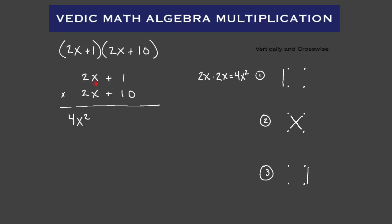Step number two, we're going to do crosswise: two X times 10 plus one times two X. Two X times 10 gives us 20 X, plus one times two X gives us two X. So 20 X plus two X gives us 22 X. So our middle term is positive 22 X.